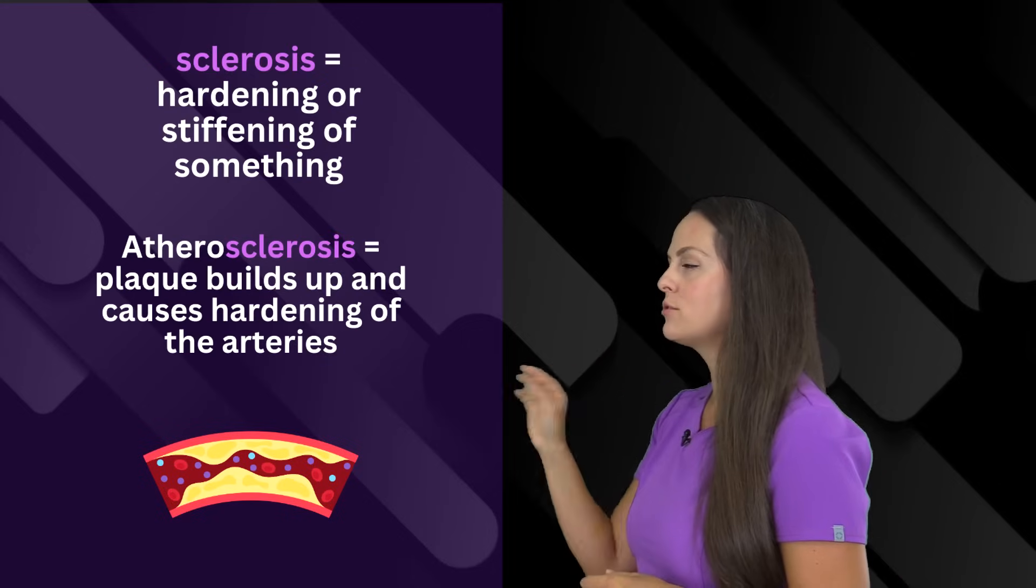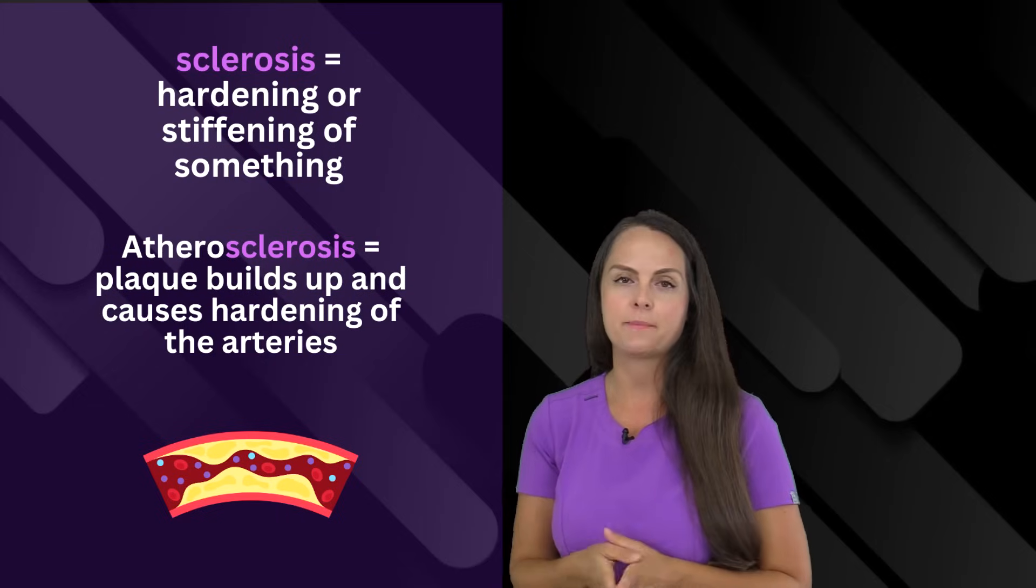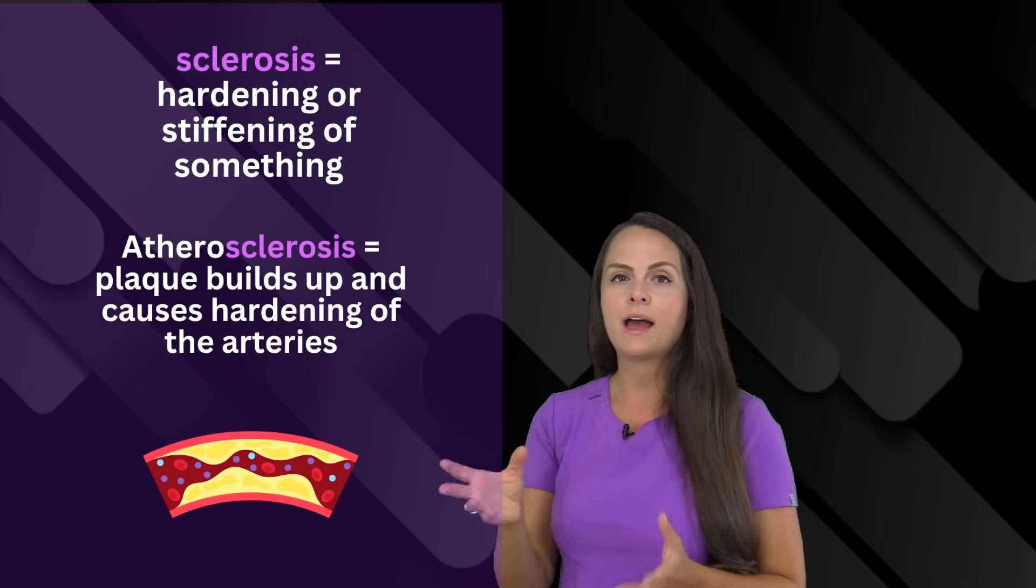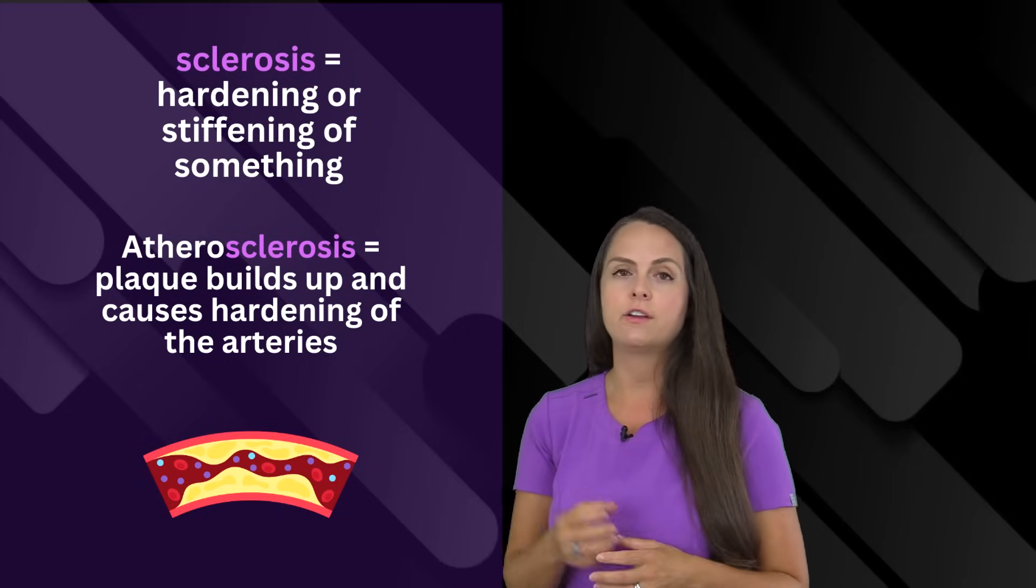And then next we have sclerosis. Sclerosis means hardening or stiffening of something. The term atherosclerosis is where we have the buildup of fatty plaque in an artery and it causes that artery to harden or stiffen over time.